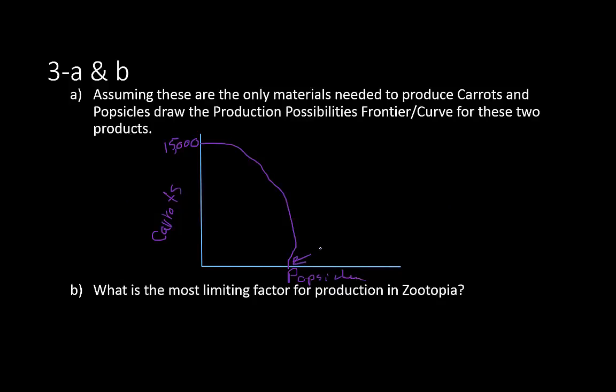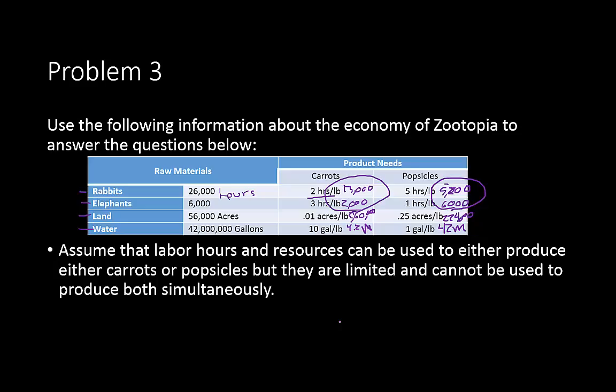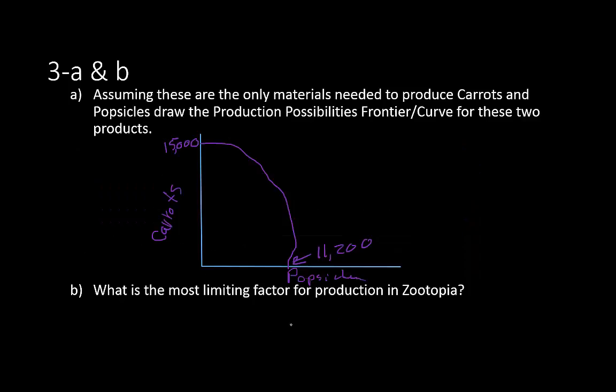So the most limiting factor in production is labor. We have plenty of land and water, but the rabbit and elephant labor is what holds us back. If we had more rabbits or more elephants, we'd be able to make more of both products. The binding constraint in Zootopia's economy is labor.